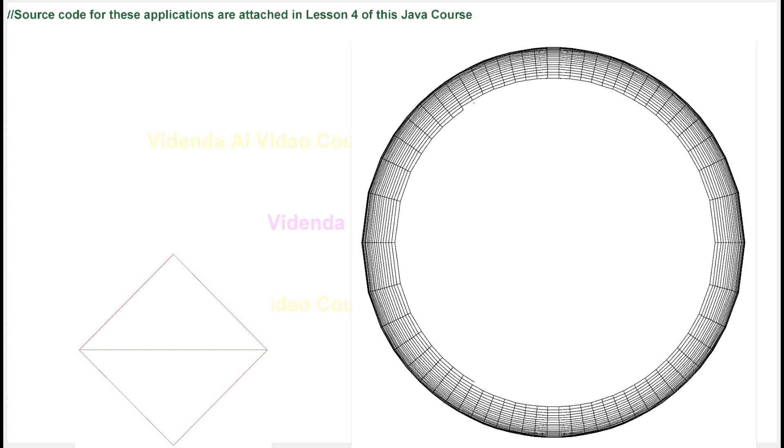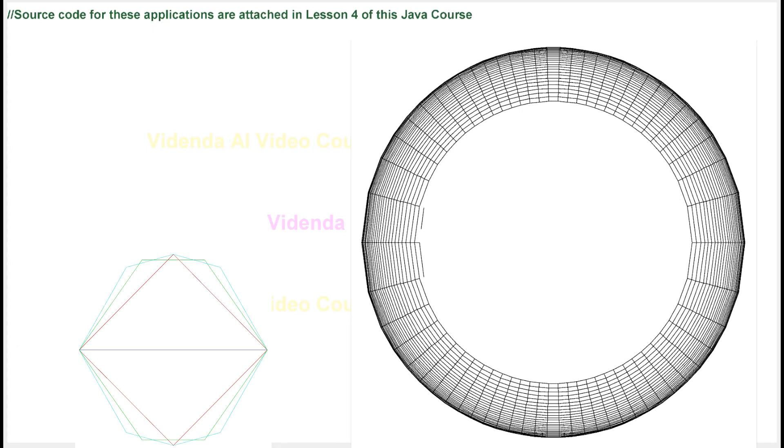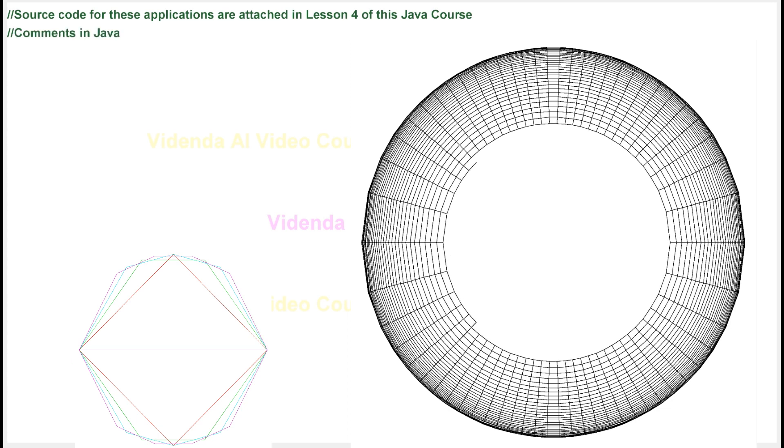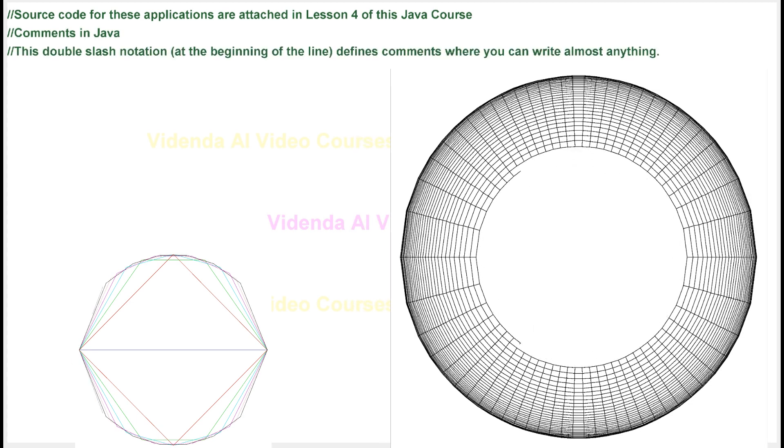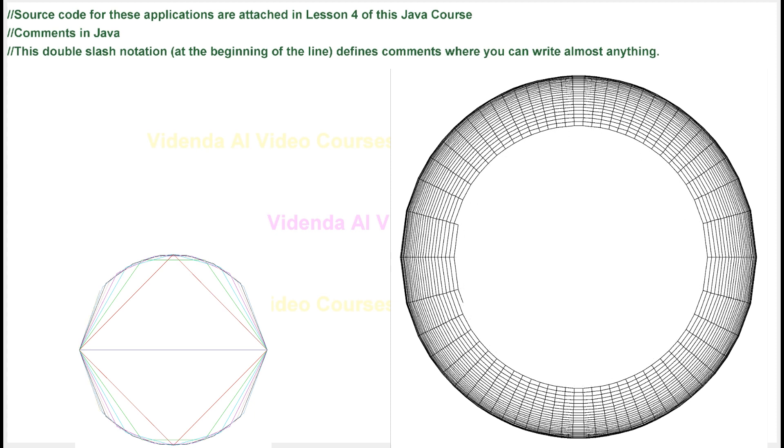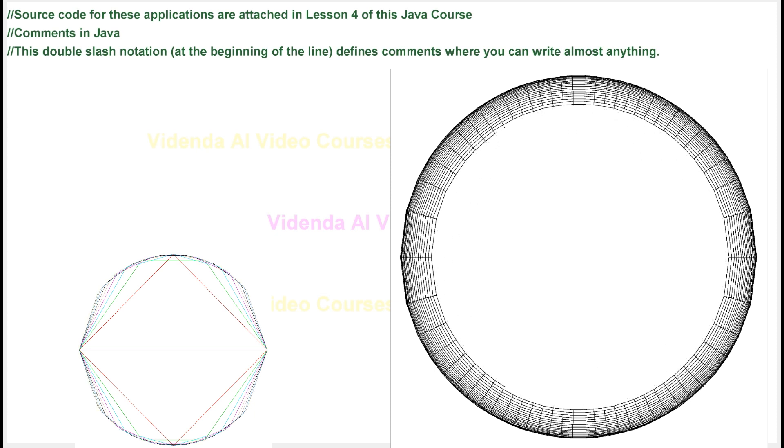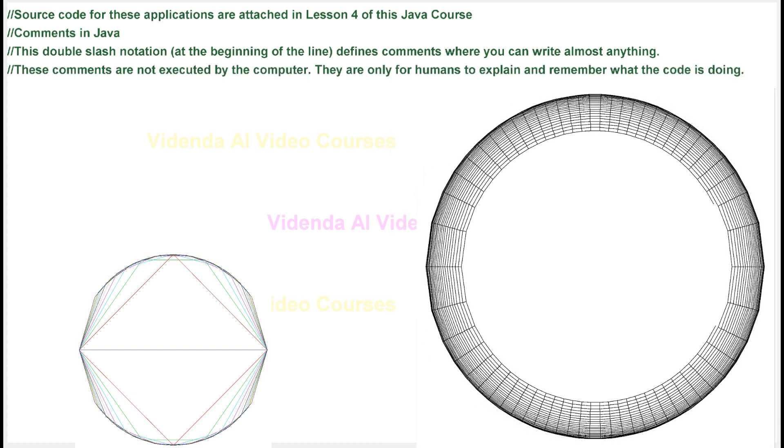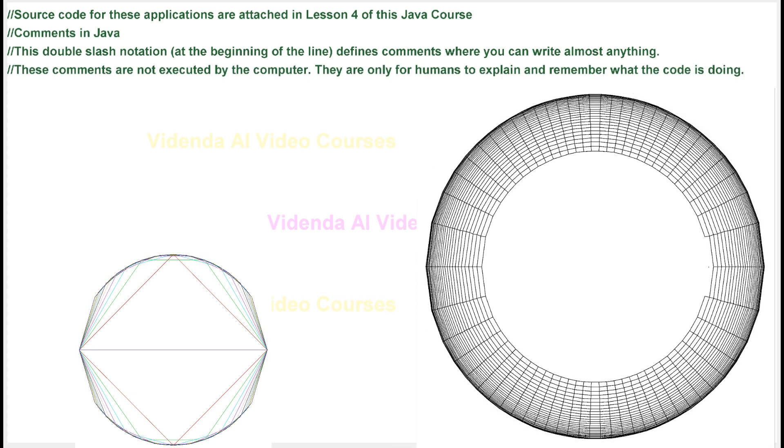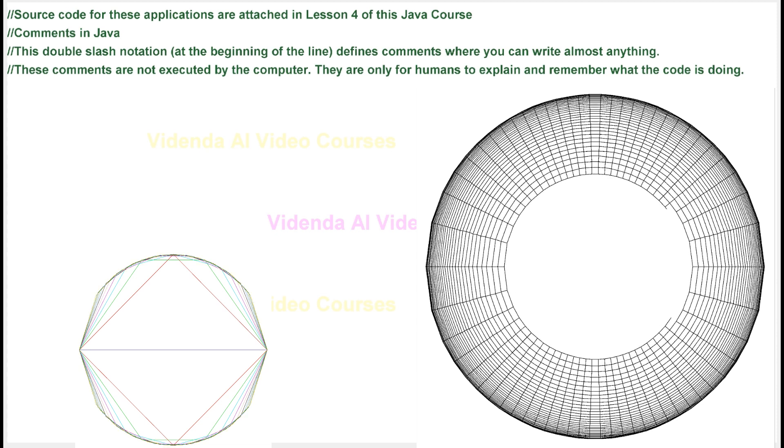Source code for these applications are attached in Lesson 4 of this Java course. This double-slash notation at the beginning of the line defines comments where you can write almost anything. These comments are not executed by the computer. They are only for humans to explain and remember what the code is doing.